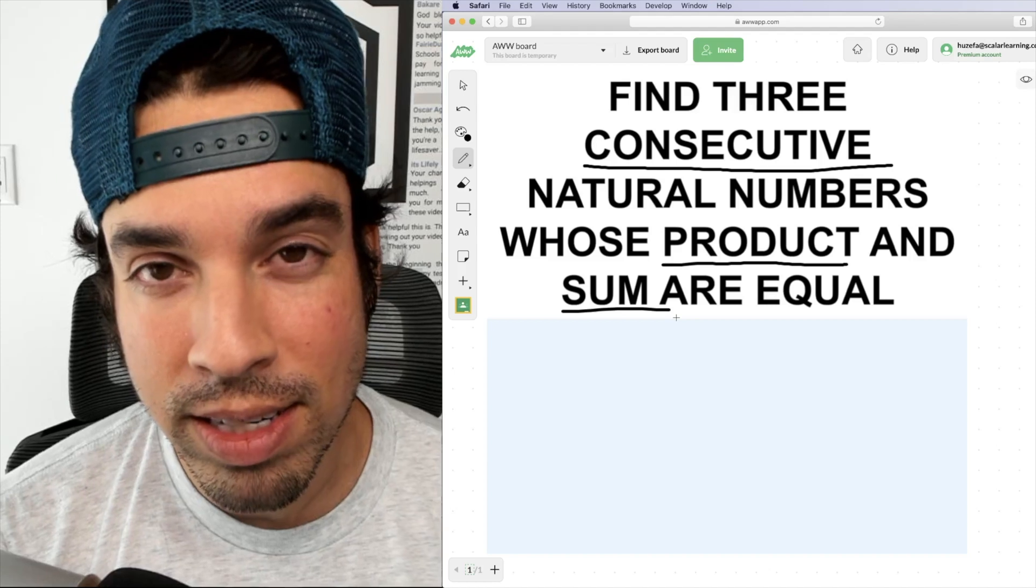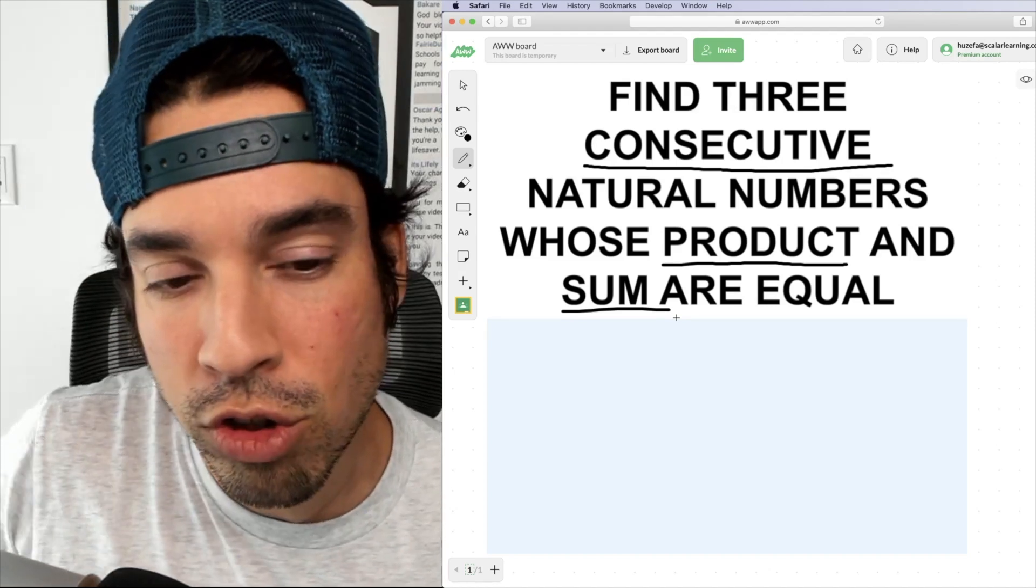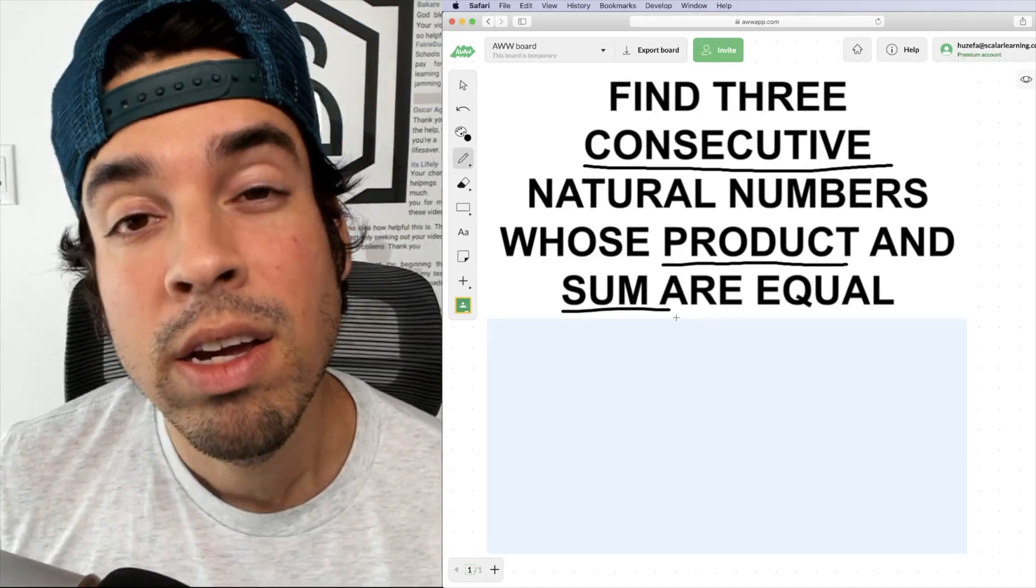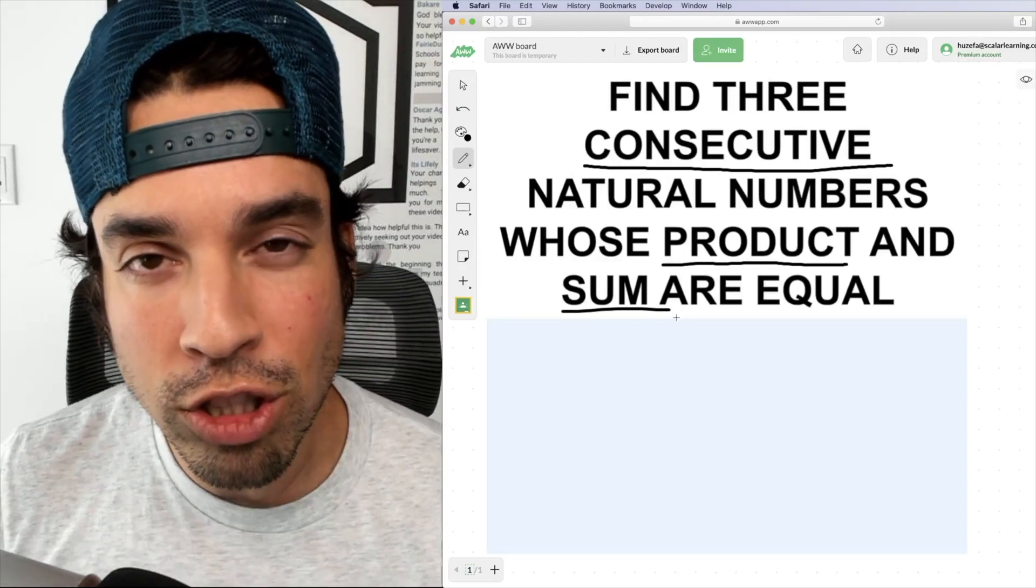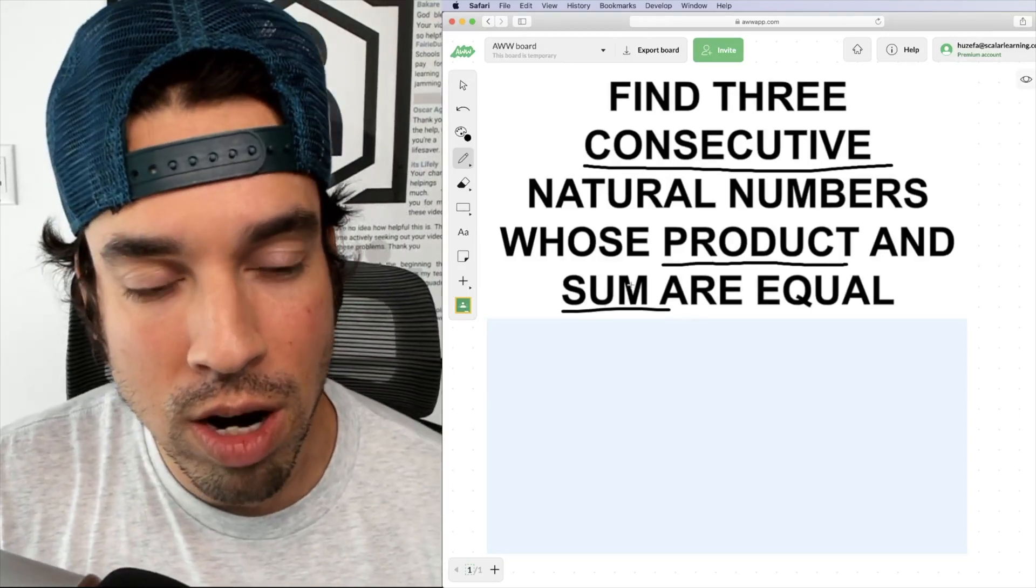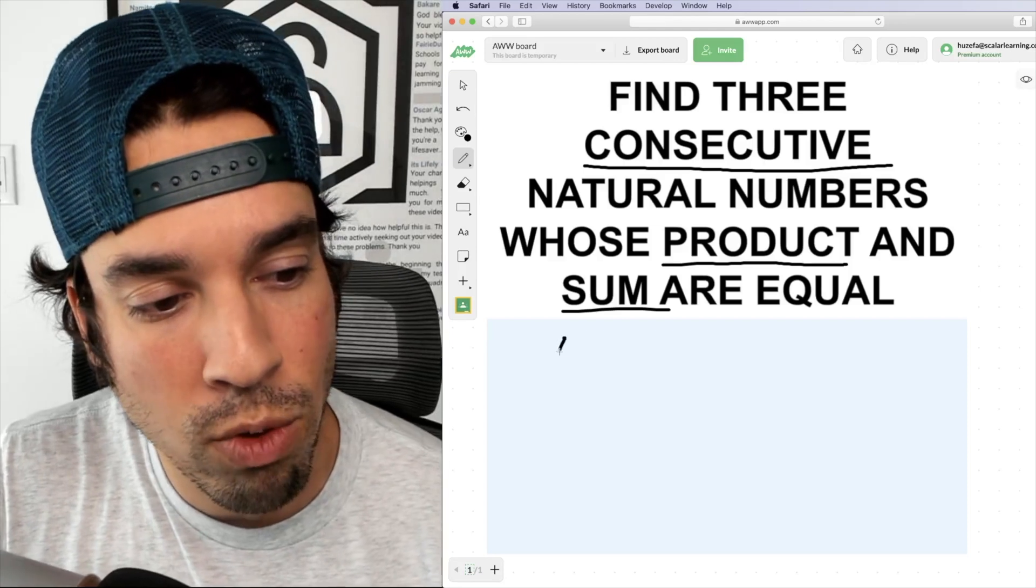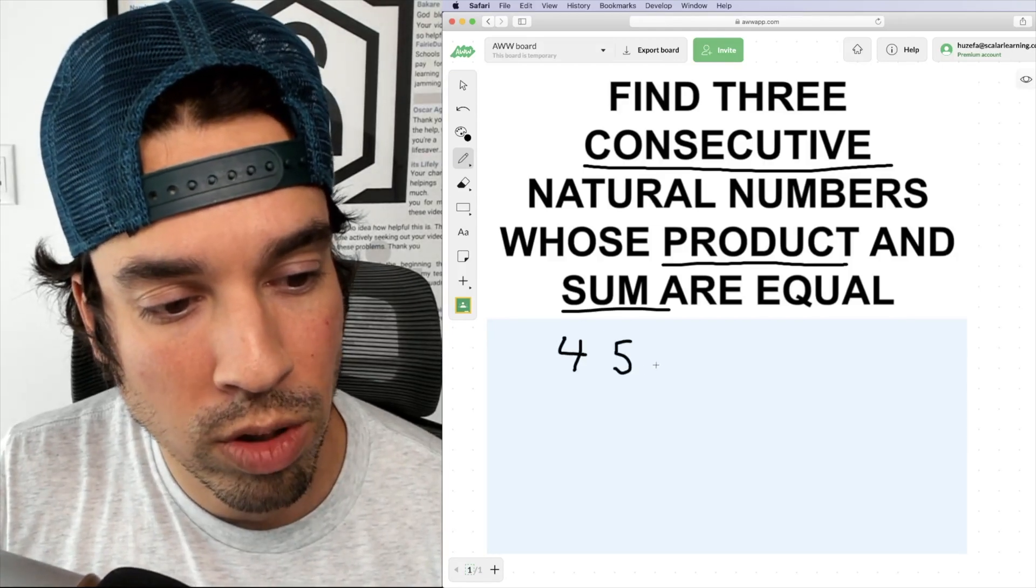All right, now I'm gonna show you how to find these three numbers. And there's two ways that we can do it. The first way is more on a logical basis. So I'm just gonna show you how to find these, basically, with a little trial and error. So the first thing, let's take that four, five, six that we were thinking of.